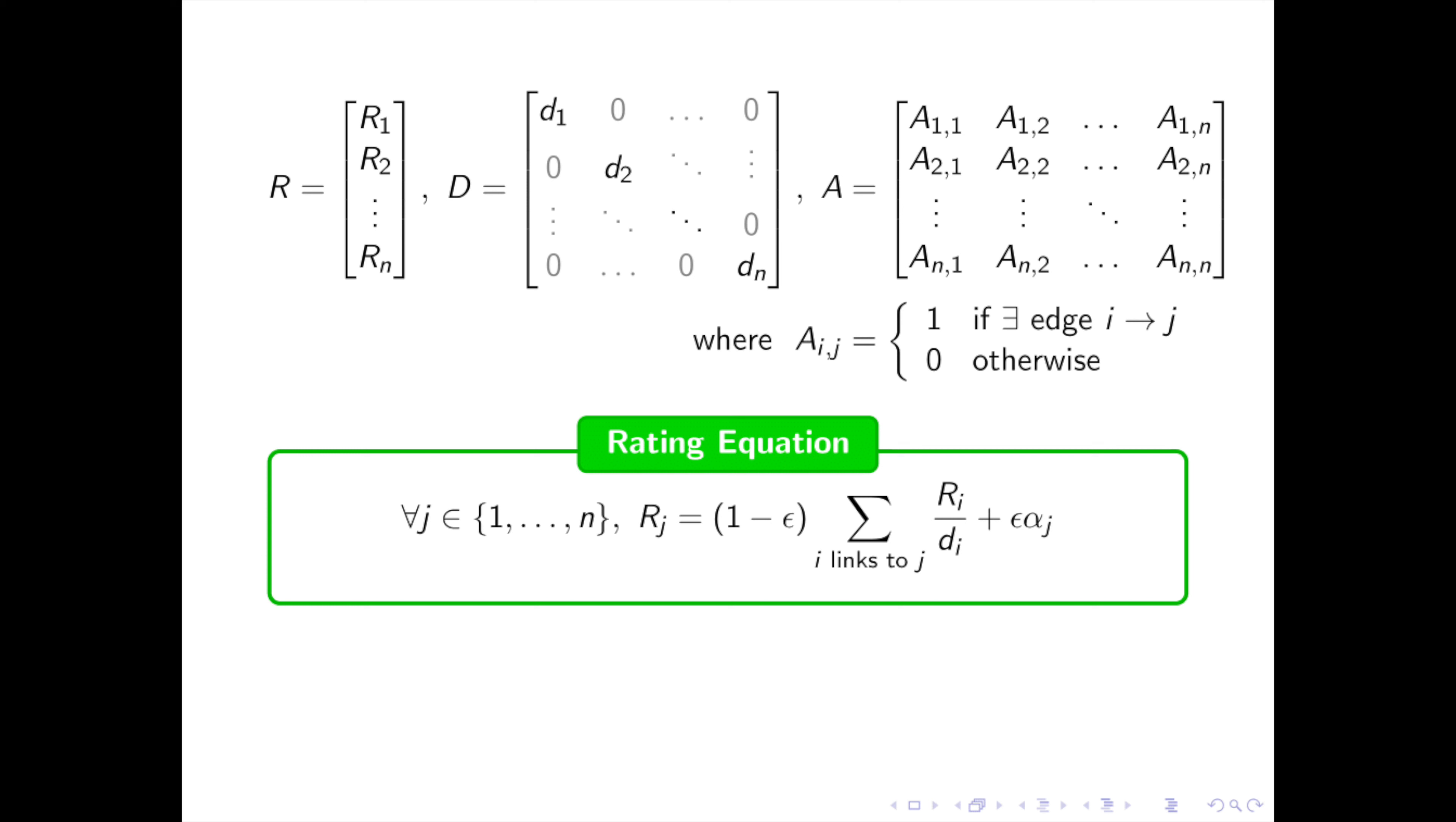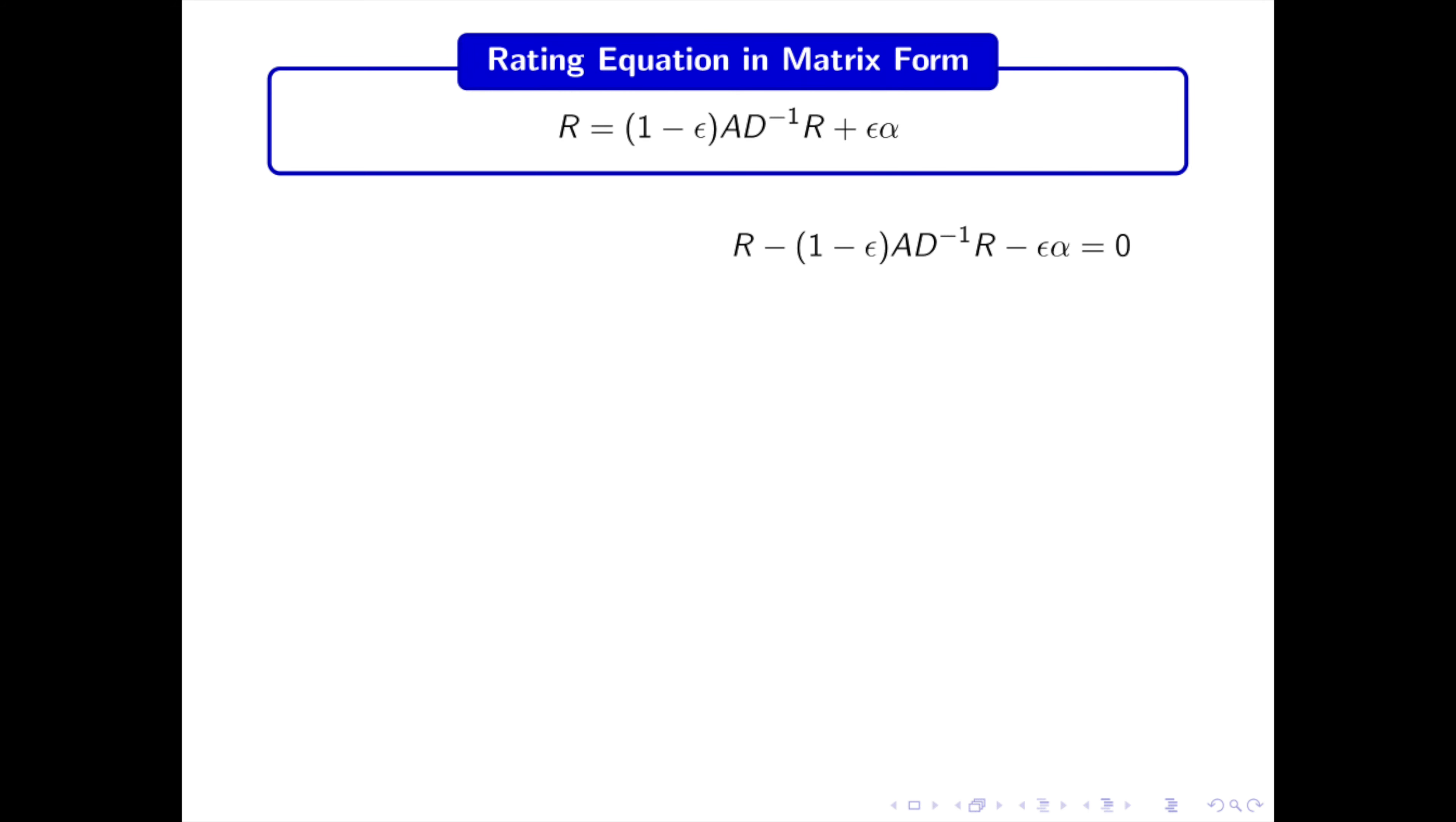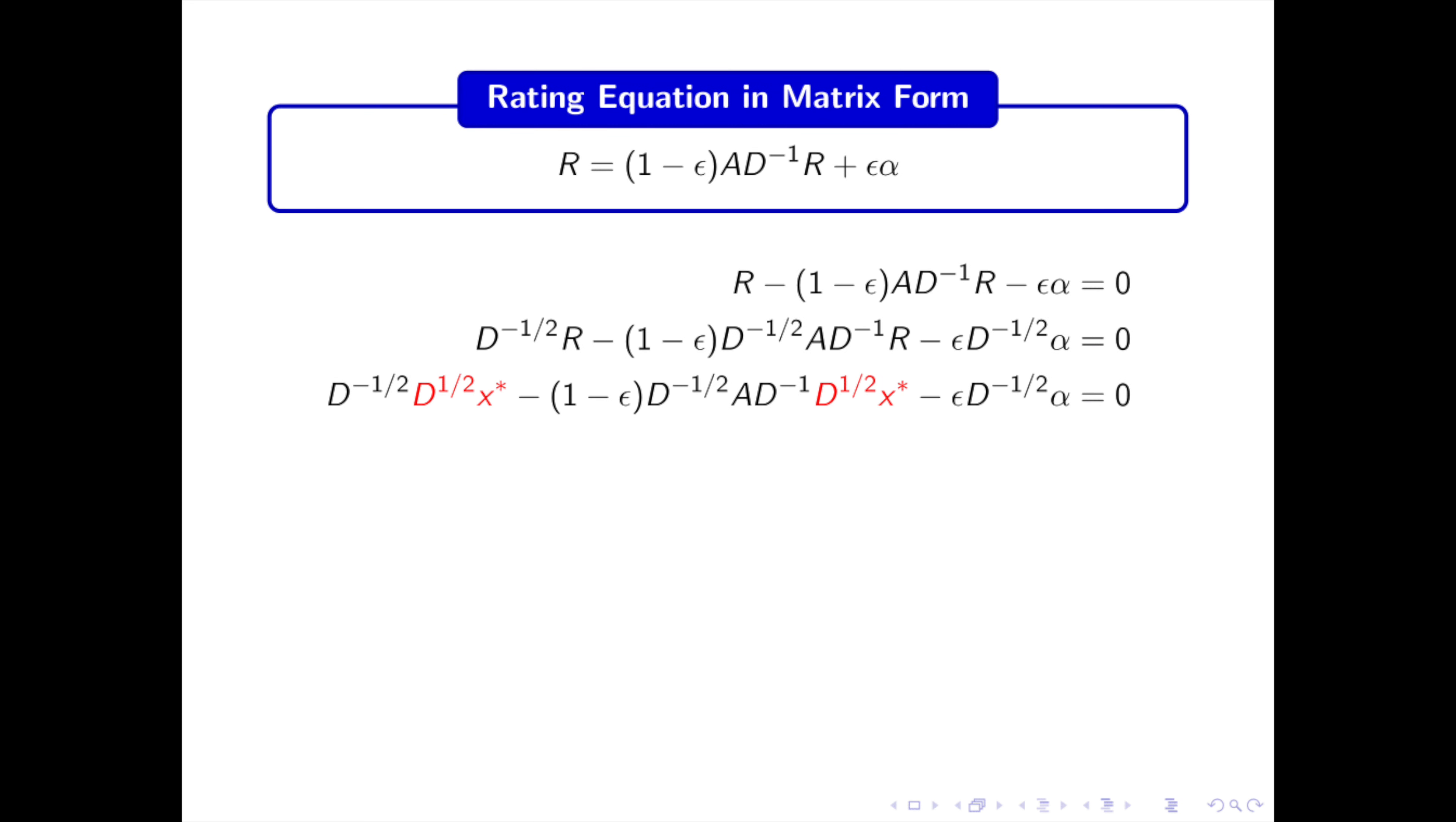Now let's take a completely different look at this problem from the perspective of optimization. Let us rewrite the definition of a rating using vector and matrix notations. We denote by r the rating vector r1 r2 rn. Then we define the adjacency matrix a, such that aij is equal to 1 if there is a link from page i to page j and 0 otherwise. Finally, we define by d the diagonal matrix of the vertices degrees. The equation satisfied by the rating, in the green box, can then be rewritten in matrix form as in the blue box.